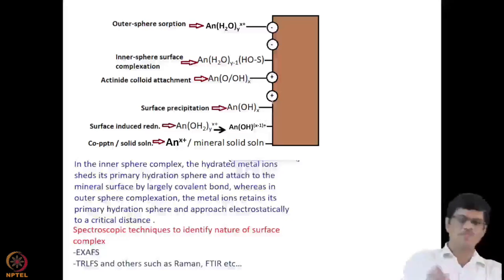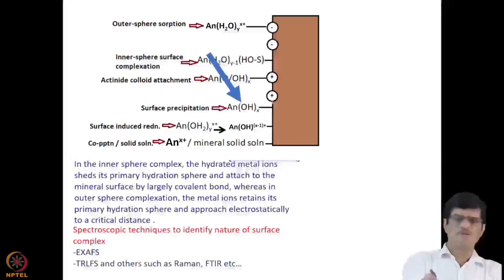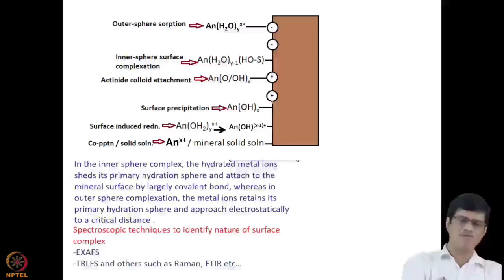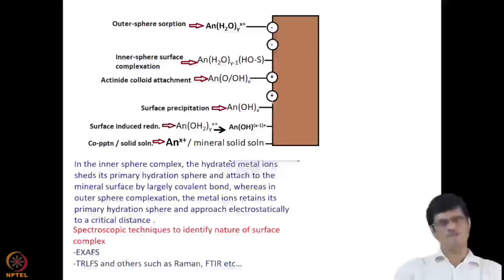There can be surface precipitation, where the actinide ion interacts with hydroxide forming a precipitate — hydrolysis forms OH_x species which precipitate and lie on the surface. There can also be surface-induced redox reactions, where the oxidation state changes from X+ to (X-1)+ if reduction takes place. There can also be co-precipitation or solid solution formation, where the actinide ion interacts with the mineral surface forming an actinide-mineral co-precipitate or solid solution.